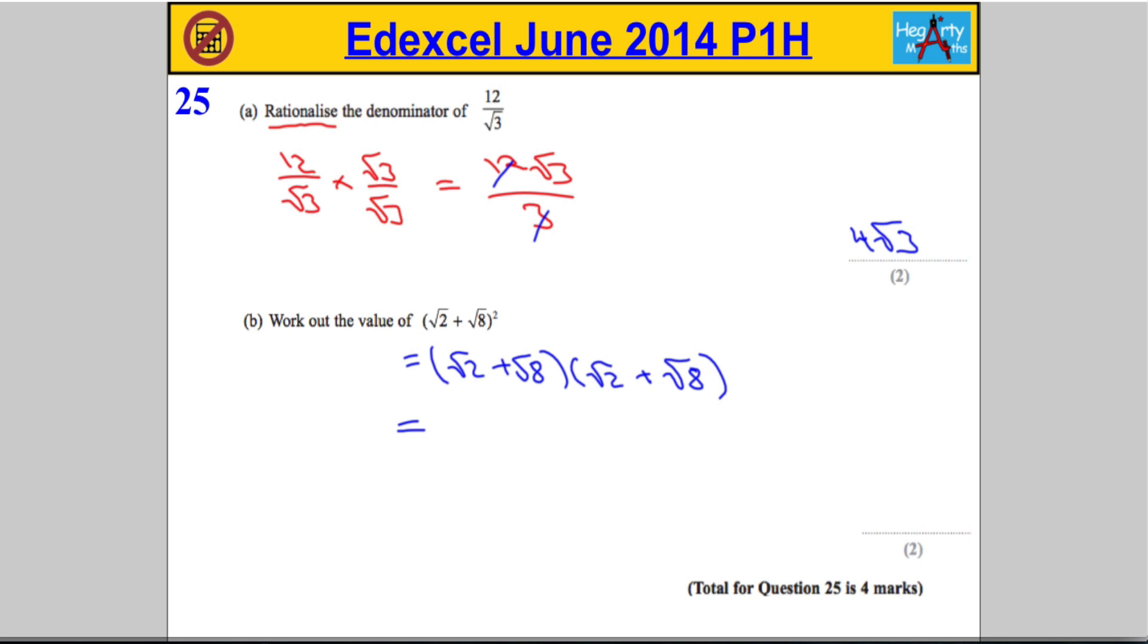Now, if you're any good at algebra, you should be able to do this. Same idea. Root 2 times root 2 is root 2 squared, which is 2. Root 2 times root 8 is, in fact, root 2 times root 8 is root 16. Root 8 times root 2 is also root 16. And then root 8 times root 8 is going to be 8.